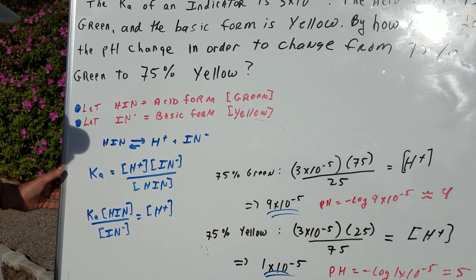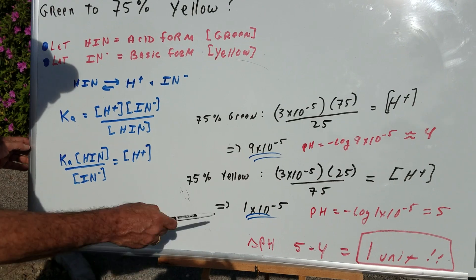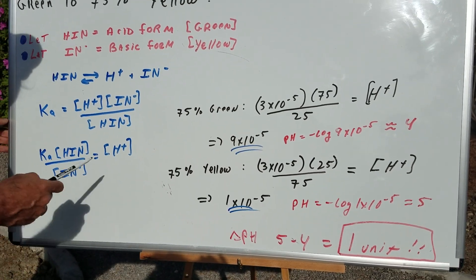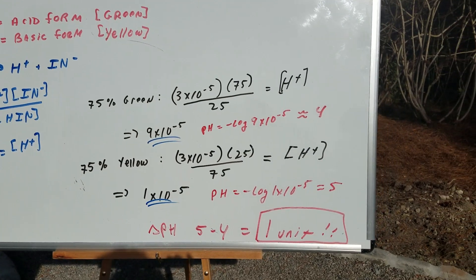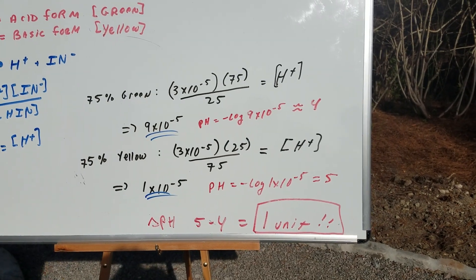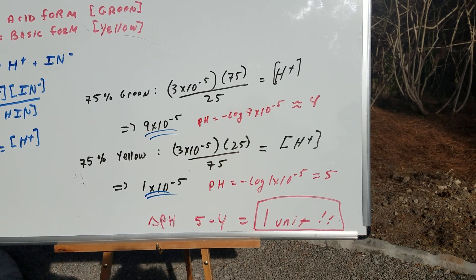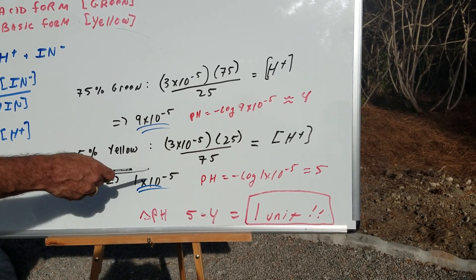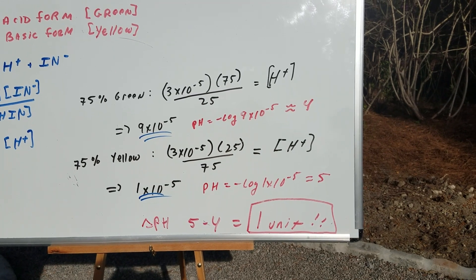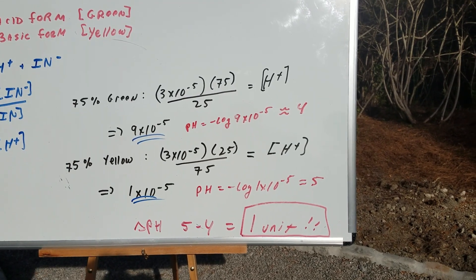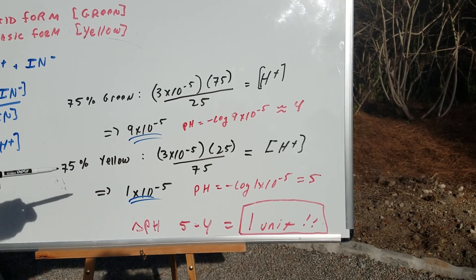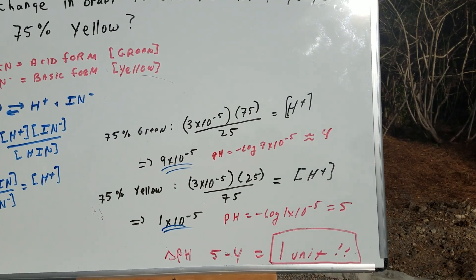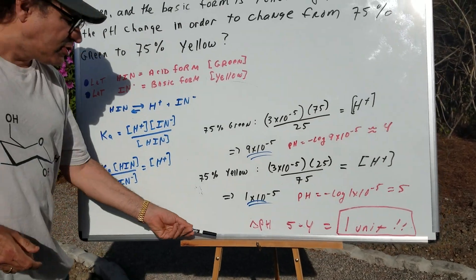Now we do the same thing. We want 75% yellow. So I'm going to take the same equation. We got the Ka. This time 75% is yellow, we're going to put the 75 on the bottom. We have the 25 as the green. And as you can see, that's a third. A third of 3×10⁻⁵ is 1×10⁻⁵. Taking the negative log of that gives you 5. So as you can see, we have a pH of 5 and a pH of 4. Therefore, they differ by one unit on the pH scale. So the answer is 1.